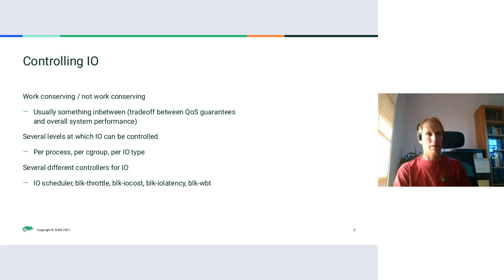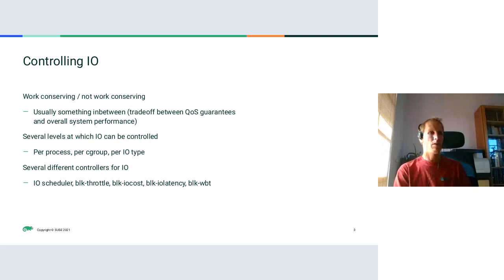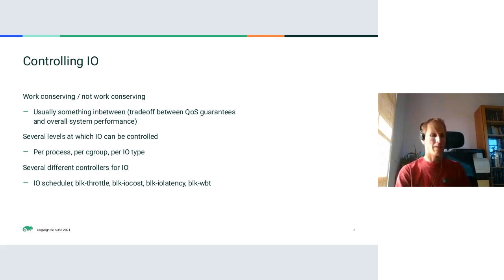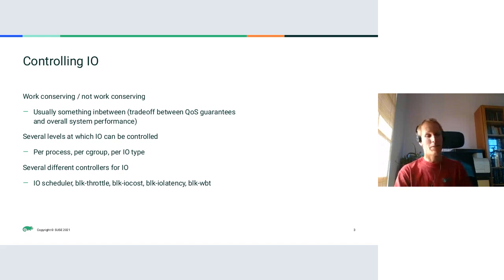There are several levels at which you can control I/O: per-process level, per-cgroup level, or per I/O type (treating reads and writes differently). There are also several different controllers in the kernel, because controlling I/O is inherently hard and no fully satisfactory solution has been found yet. Each controller has somewhat different properties, so you have to pick what suits you best. Combining controllers is possible in principle, but results are likely unsatisfactory because each controller has an internal model of storage stack behavior, and stacking them violates those assumptions.